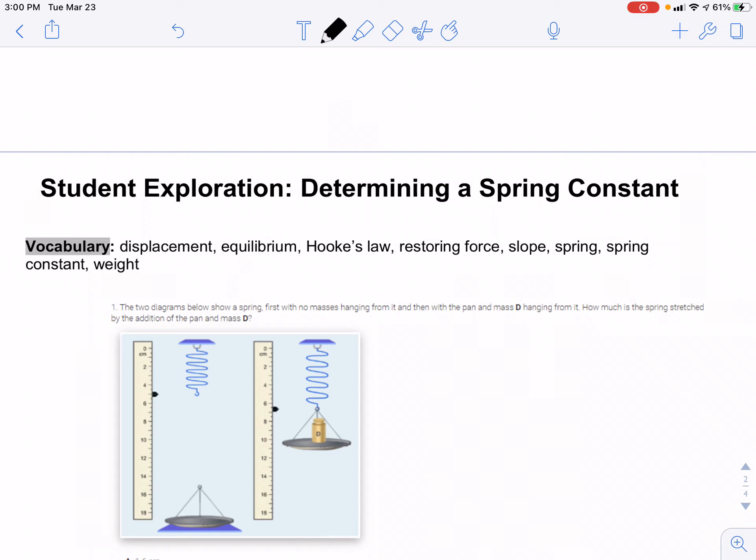A slope - the slope of the line in this case will connect to a particular concept. The spring constant, which in the case of a force versus displacement graph will be the slope, that is where it connects. And weight, because weight is what's going to be stretching the spring and essentially equal and opposite to the spring force.